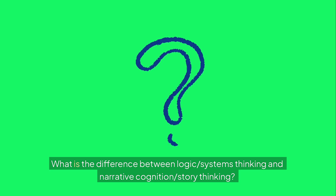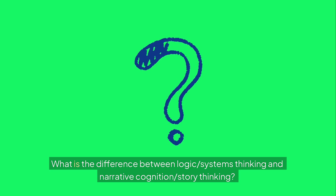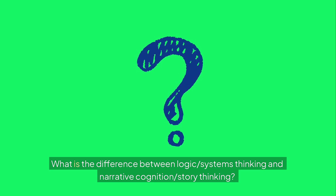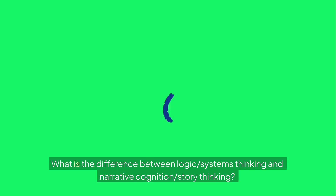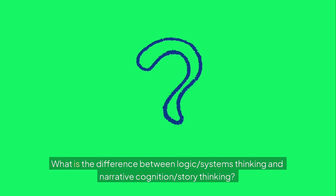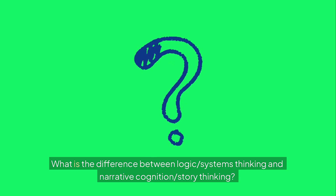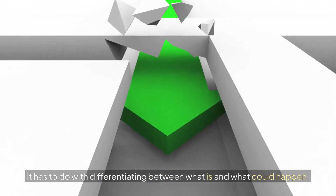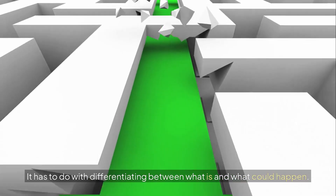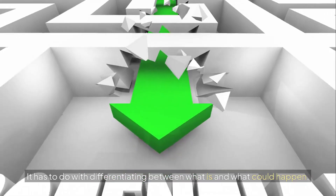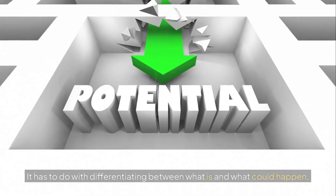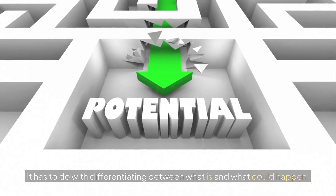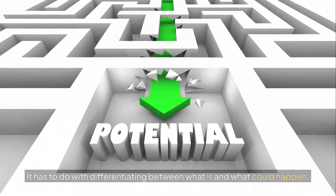What is the difference between logic and systems thinking versus narrative cognition and story thinking? It has to do with differentiating between what is and what could happen.